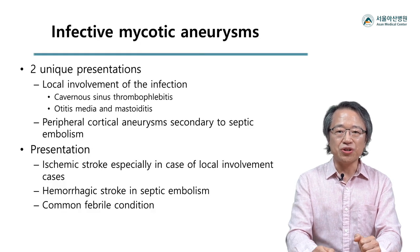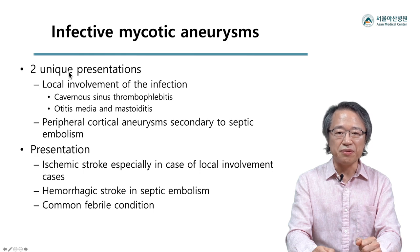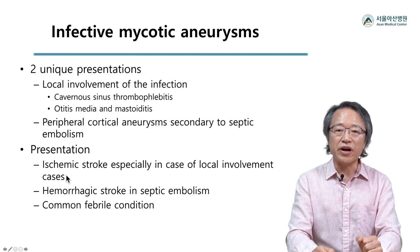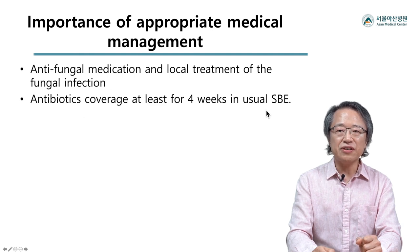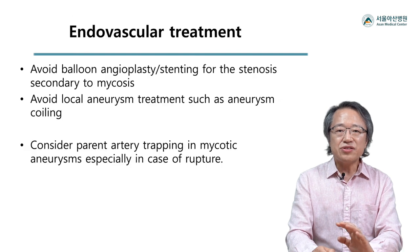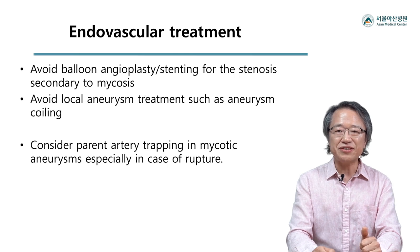Infective aneurysms, also known as mycotic aneurysms, are another important condition. They are a consequence of either local or remote infective arteritis and can present with either ischemia or hemorrhage. Medical treatment — especially a sufficient duration and appropriate antibiotic regimen — is the prerequisite before endovascular treatment. Since these lesions form due to fragility of the infected arterial segment, trapping of the segment including the aneurysm could be the most secure treatment.